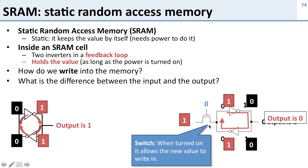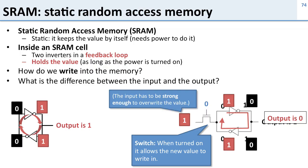Looking at this cell, you should ask yourself: what's the difference between the input and the output? The output is on one side and the input on the other, but they're essentially the same node — the only difference is one is inverted from the other. So you can get either the same value or the inverted value out just as easily. There's also a subtle point: when you write a value in, it has to be strong enough to overcome the inverter, which is trying to output its current value. These circuits are carefully designed so that the write signal is strong enough to overwrite the stored value.